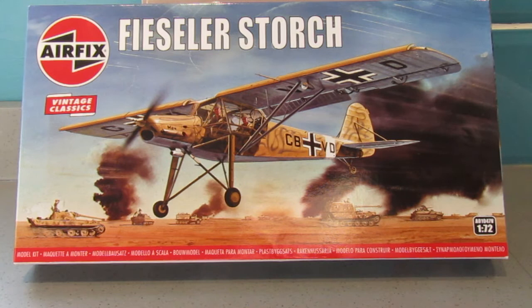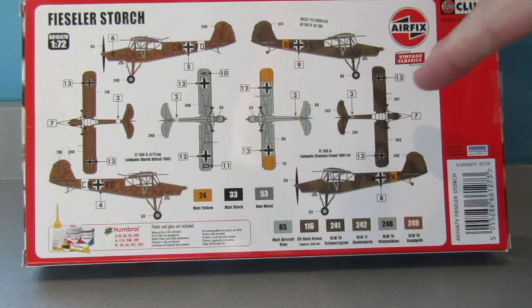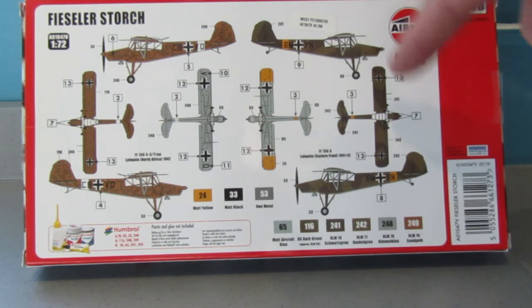So the one we've got there is North Africa 1942, and the other one, this one here with the different tones of green camo, is Eastern Front 41 to 42.